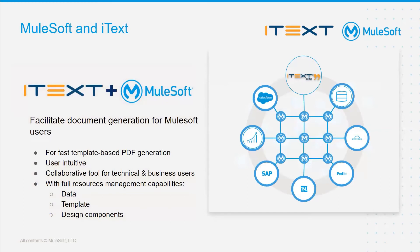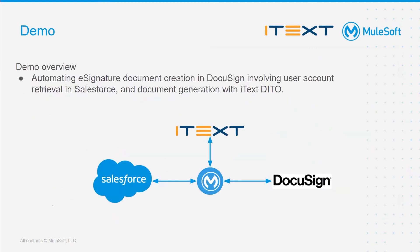iText and MuleSoft have partnered and added the iText Deto API to MuleSoft's AnyPoint Exchange. This API will enable customers to seamlessly integrate iText Deto to multiple data sources across the enterprise, facilitating document generation at scale. Today we'll be going through a demonstration of MuleSoft integration using iText Deto as a document generation platform, obtaining data from Salesforce as an input source, with DocuSign at the receiver end consuming the document generated by iText Deto to generate an e-signature document for users.